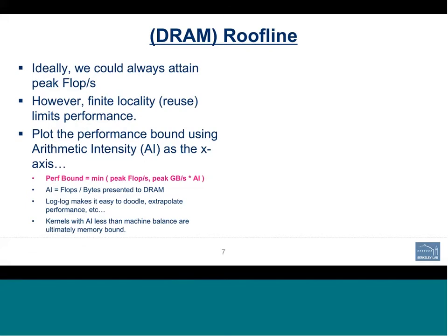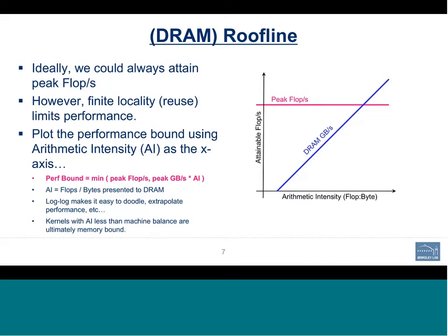Let's start with a simplified version of the roofline — the DRAM roofline. Ideally one might hope to always attain peak flops, but in reality we have finite locality and finite reuse of data. We can plot that bound using arithmetic intensity as the x-axis, which is the ratio of flops to bytes presented to DRAM. Our performance bound is not just peak flops but also includes the actual bandwidth of the underlying machine. Depending on arithmetic intensity, kernels with AI less than the machine balance are memory bound, while those with higher AI are compute bound.